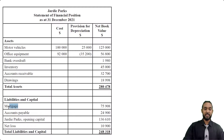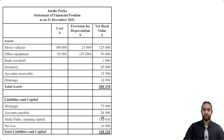On the liabilities and capital side: mortgage is a non-current liability, accounts payable is a current liability. There's a net loss which needs to be subtracted because a net loss means you lose some capital. As we can also see, total assets is not equal to liabilities and capital, so we have some stuff to fix. Let's pull up a corrected balance sheet.